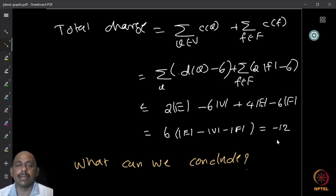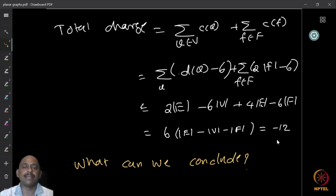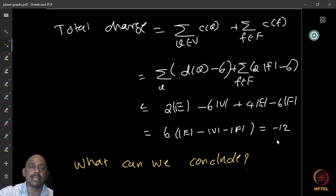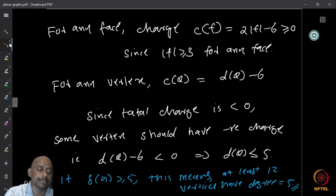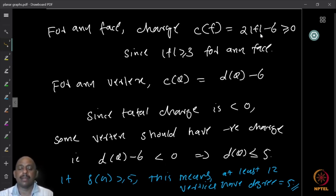So what can we conclude? No matter what planar graph we started with, the total charge is going to be less than or equal to −12. Since the total charge is negative, some element in the summation must contribute a negative value. Looking at faces: every face boundary has at least three edges, so the length of any face is at least three. Therefore 2×(length) − 6 ≥ 0, meaning face charges are always non-negative.